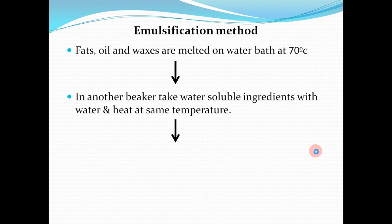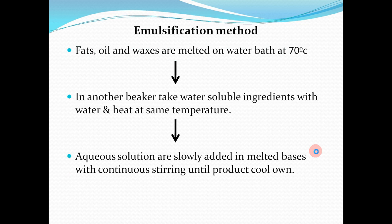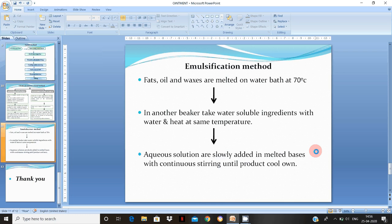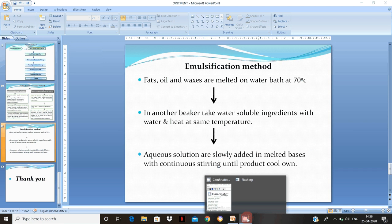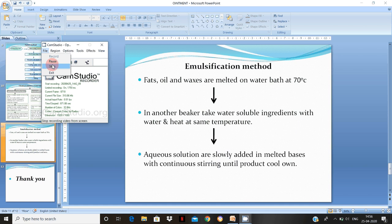The emulsification method: fats, oils, and waxes are melted on a water bath at 70°C. In another beaker, the water-soluble ingredients (aqueous phase) are heated to the same temperature. The aqueous solution is then slowly added to the above melted mass with continuous stirring until the product cools down. This forms the ointment by emulsification. These are the preparation methods for ointment. Thank you for watching.